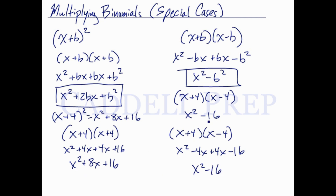Just like we got here from using this method. So if it's x plus some number times x minus that same number — the same exact binomial — you use this format. If we have x plus some number times x minus that same number, it's going to come out to be in this format.